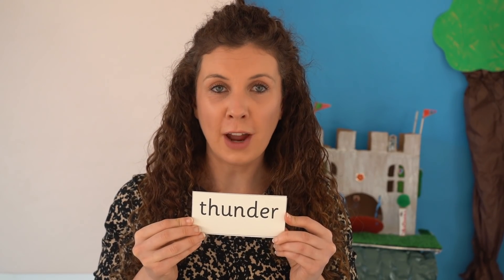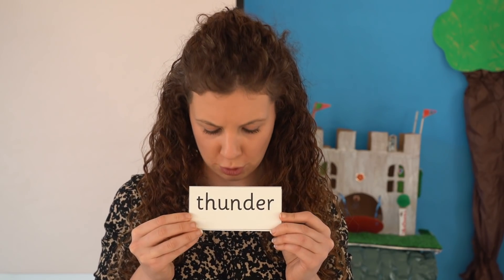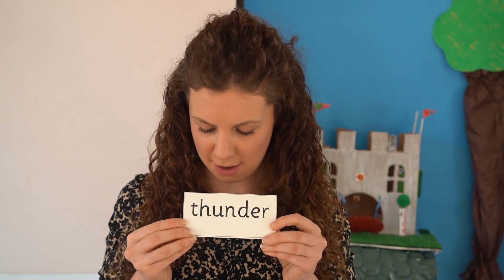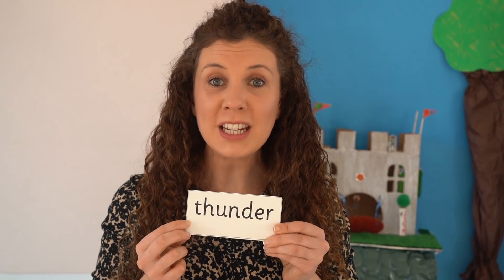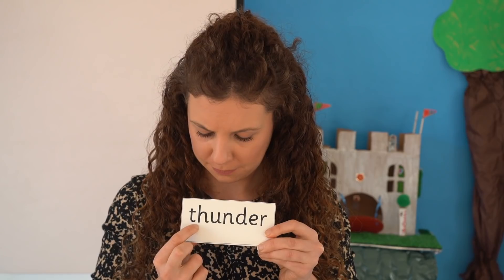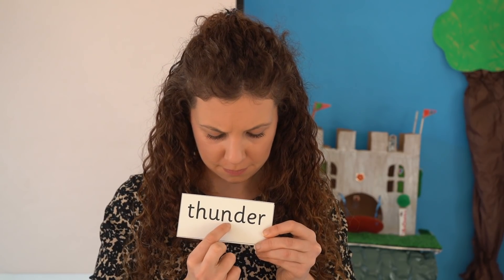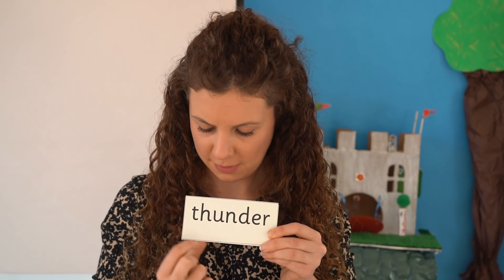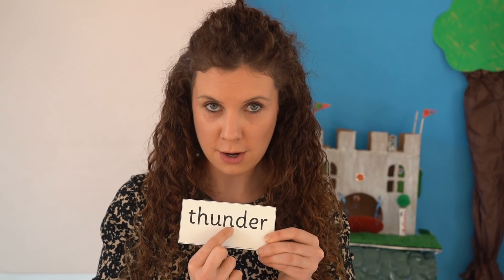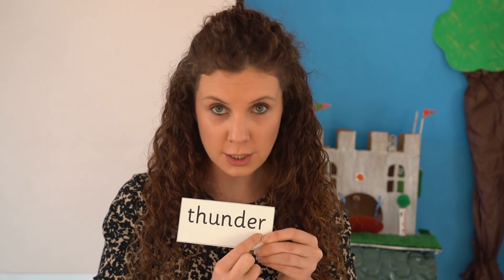Can you spot the digraphs? Two letters, one sound. Have a good look. Yes, the digraphs are TH and U. It's a longer word, so let's chunk it up. Read each sound, then blend. Thunder. It's exciting to hear thunder and see lightning.